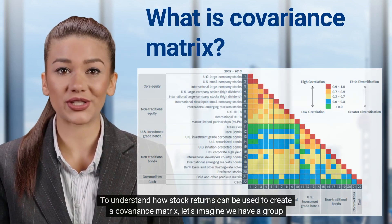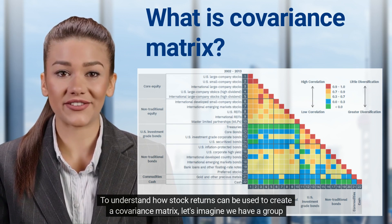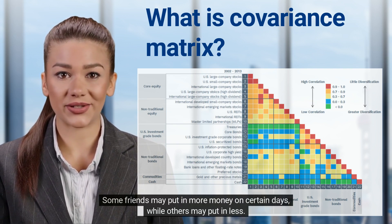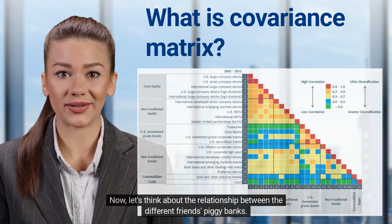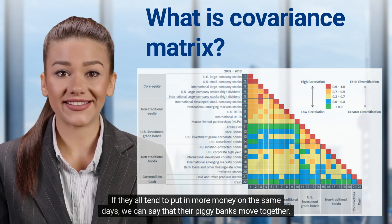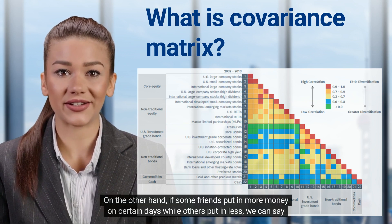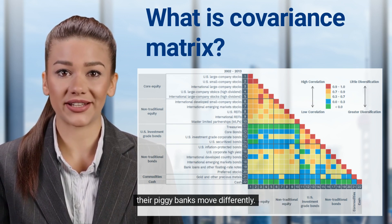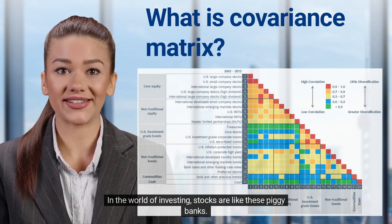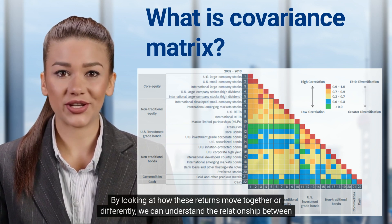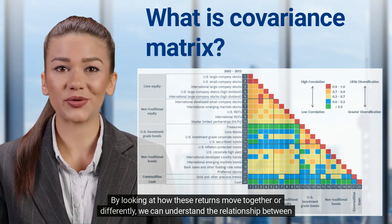To understand how stock returns can be used to create a covariance matrix, let's imagine we have a group of friends who each have their own piggy bank. Every day, they put some money into their piggy banks, but the amount they put in can change. If they all tend to put in more money on the same days, we can say that their piggy banks move together. On the other hand, if some friends put in more money on certain days while others put in less, we can say their piggy banks move differently. In the world of investing, stocks are like these piggy banks, and stock returns are like the changes in the amount of money in the piggy banks. By looking at how these returns move together or differently, we can understand the relationship between different stocks.